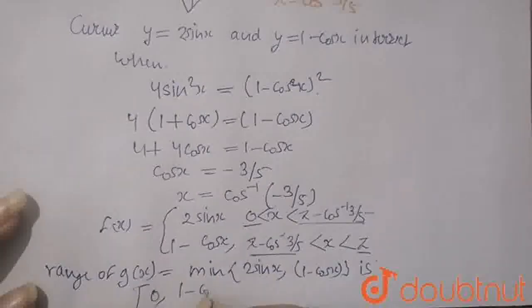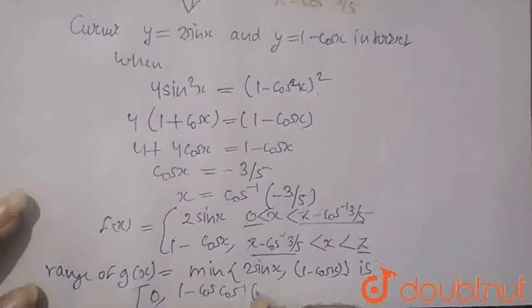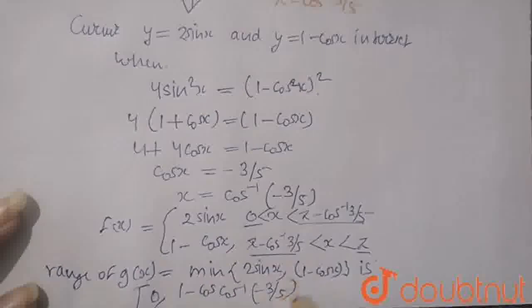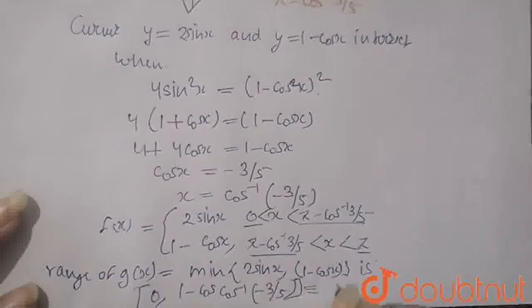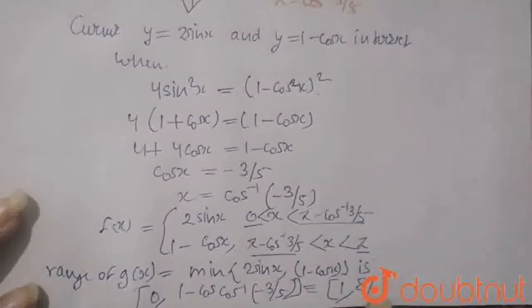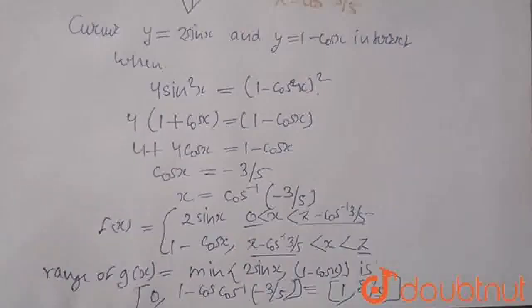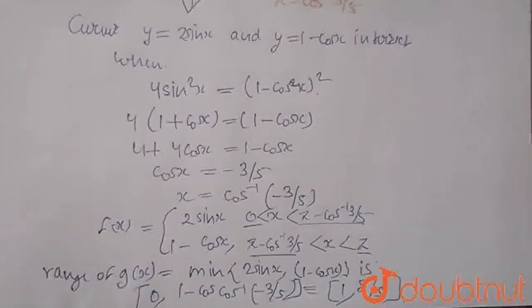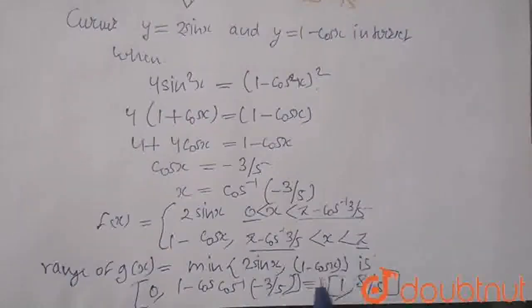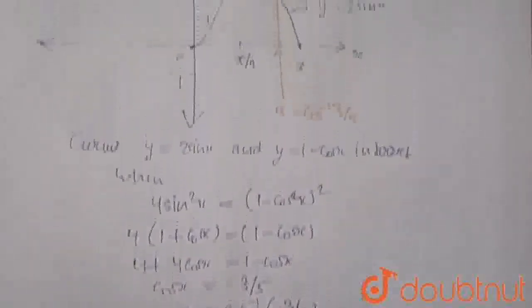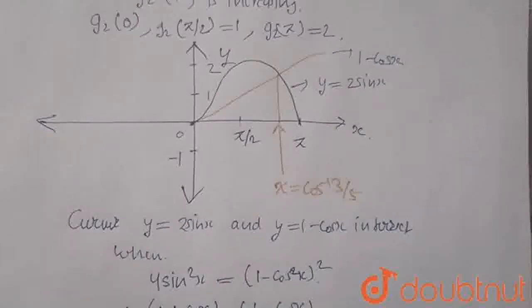It is equal to, I am writing here, it will be equal to 0 comma 1 minus cos of cos inverse minus 3 by 5, which will be equal to 1 comma 8 upon 5. So this will be the value of its range. This is the range of gx function and this is our answer. And this is a graph which we have to form. So thank you.